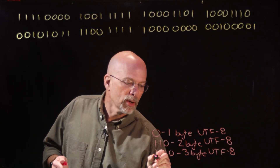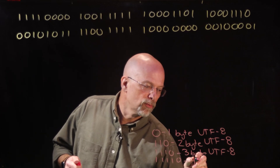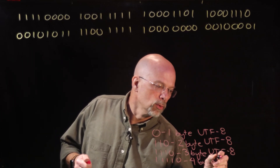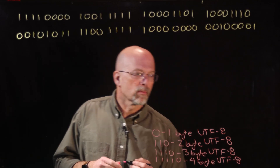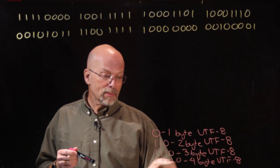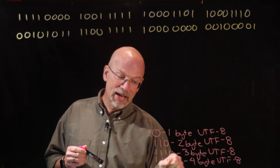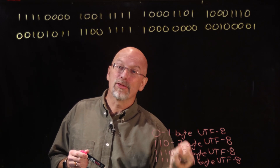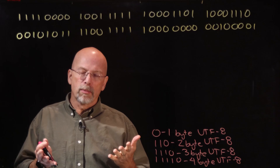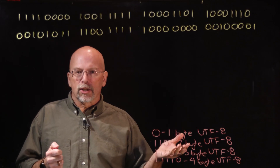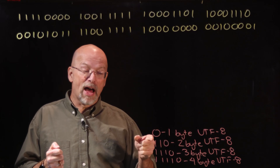We also have one-one-one-one-zero, which is four-byte UTF-8. In the first byte, five bits are taken up by this pattern, so the remaining three bits are the first three bits of our Unicode code point. The remaining bits of the code point are found in the three bytes that follow.